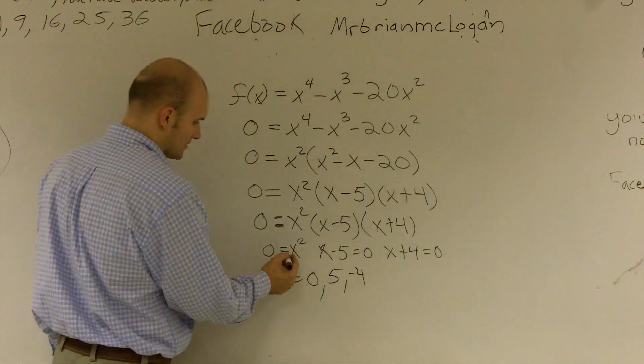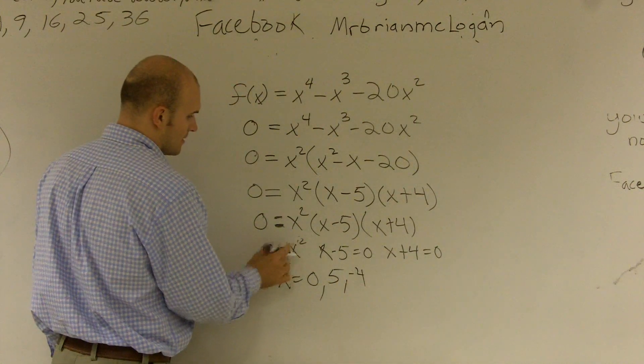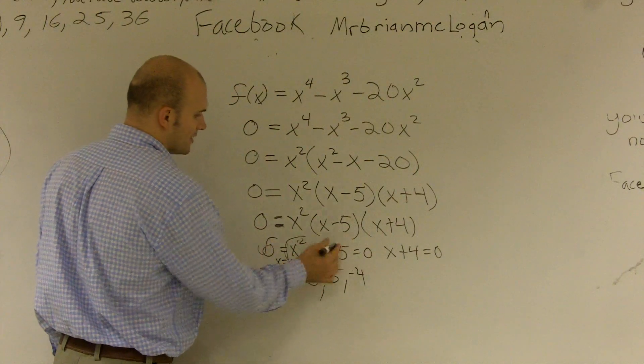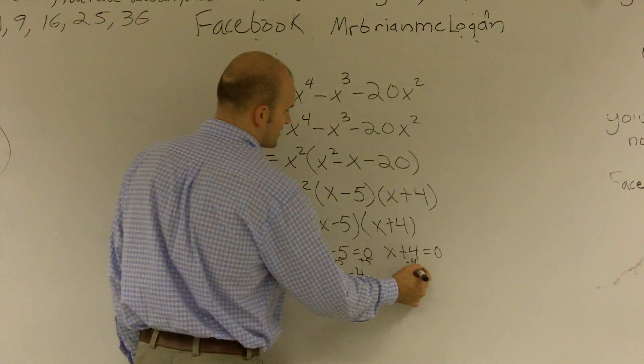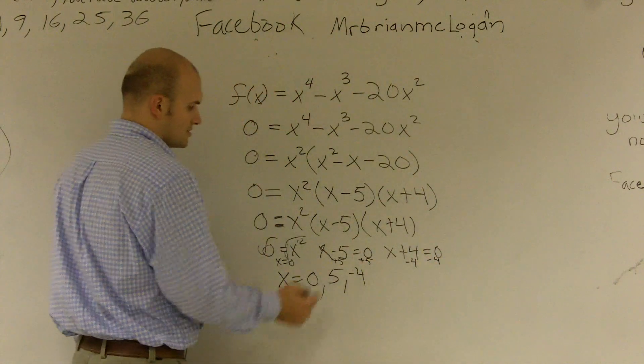You say, how did I do that? Well guys, I took the square root of both sides, x equals 0. Here, I added a 5 to both sides. Here, I subtracted a 4. So those are my zeros.